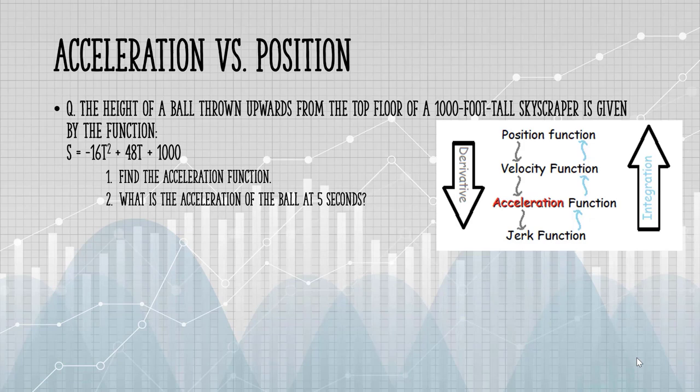Here's a second example. The height of a ball thrown upwards from the top floor of a 1,000 foot tall skyscraper is given by this function. We aren't told it's a position function, but as we're told, this function tells us the height. Height is position. We want to find the acceleration function, and what is the acceleration of the ball at 5 seconds. If we look at the chart, we see that in order to find the acceleration function, we need to take the derivative twice.